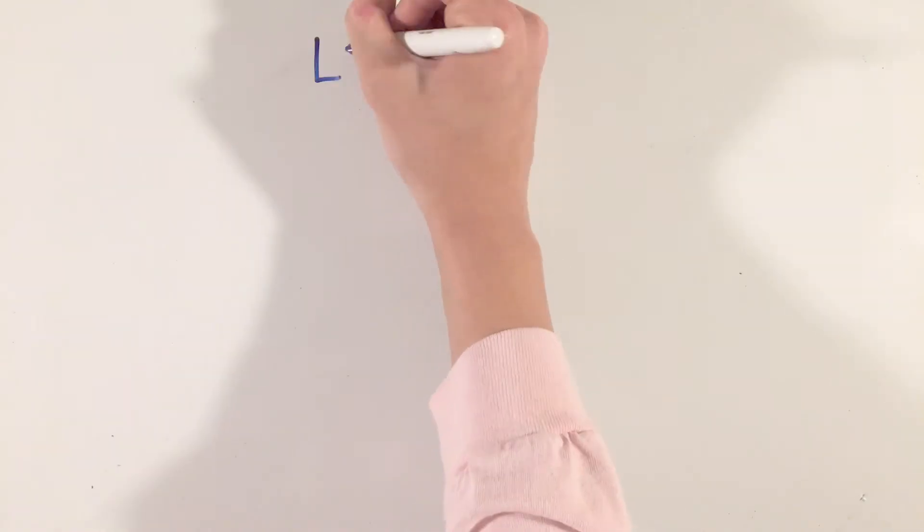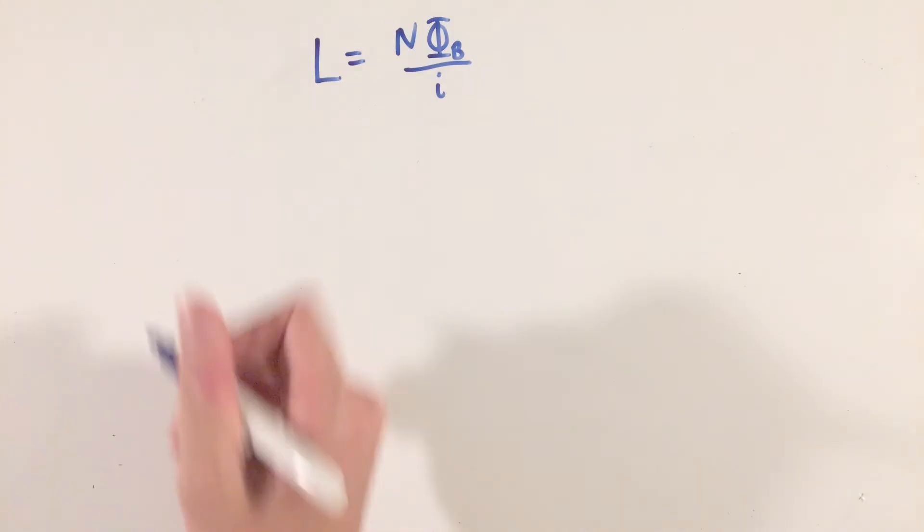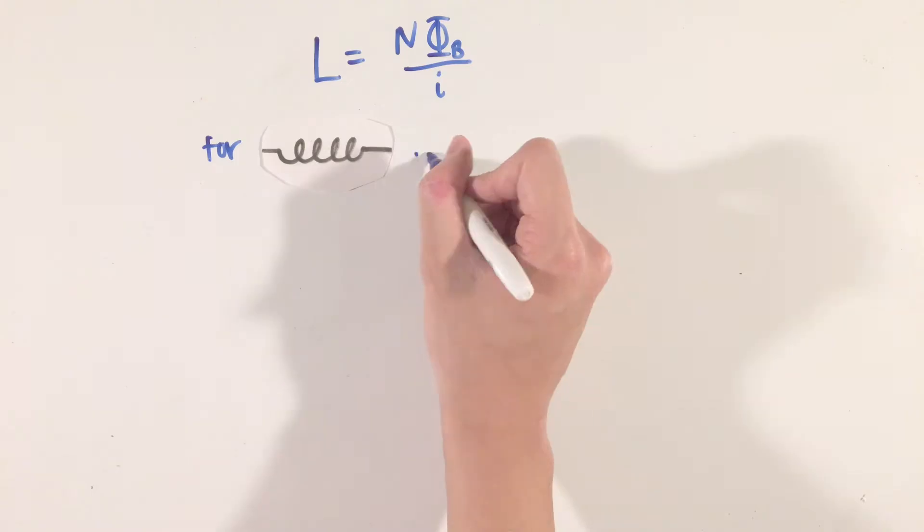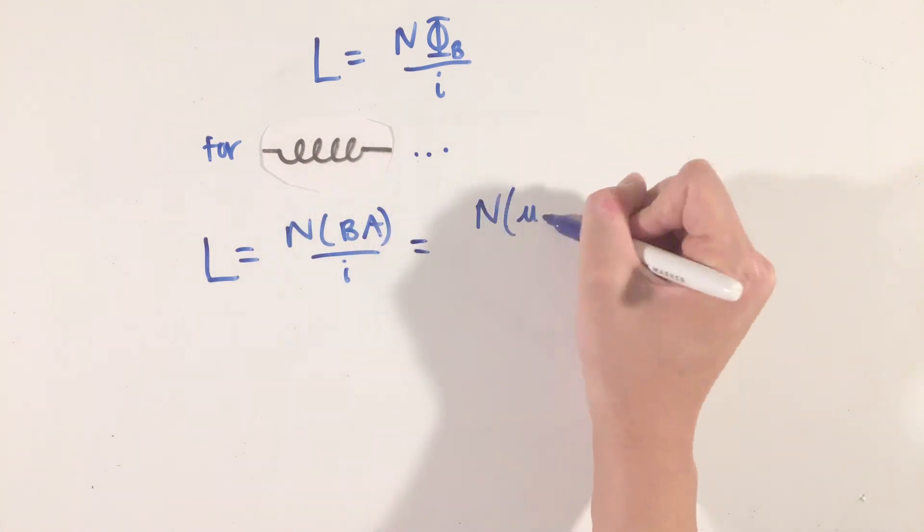The fundamental definition of the inductance of an inductor is that inductance equals the number of coils times the magnetic flux, all divided by the current in the coils of wire.